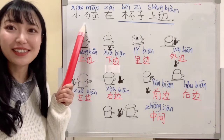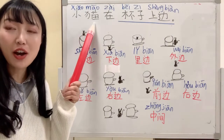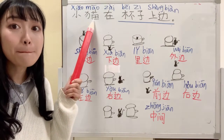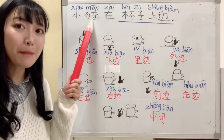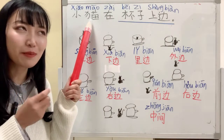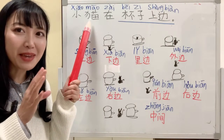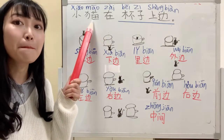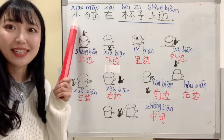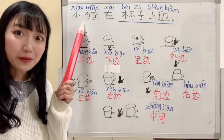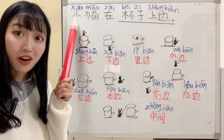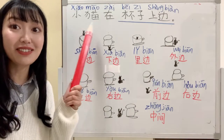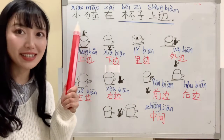So cat, we can say 小猫. Actually, cat is 猫, 猫. The sound is a little like meow, right? But in Chinese, cat is 猫. 小 means small or little. So 小猫 means small cat or little cat. 小猫.